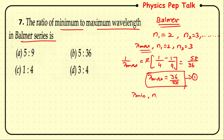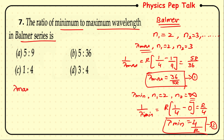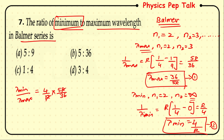The minimum wavelength corresponds to n₂ = ∞: 1/λ_min = R(1/4 − 0) = R/4, so λ_min = 4/R (equation 2). Therefore λ_min/λ_max = (4/R) × (5R/36) = 20/36 = 5/9. So λ_min : λ_max = 5 : 9, and option A is the correct answer.